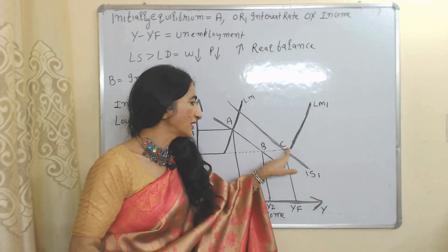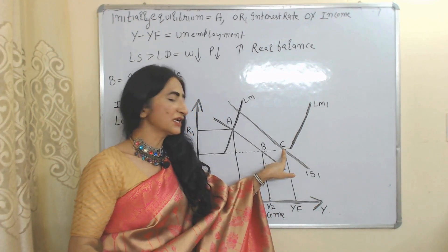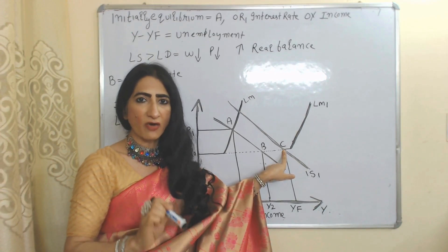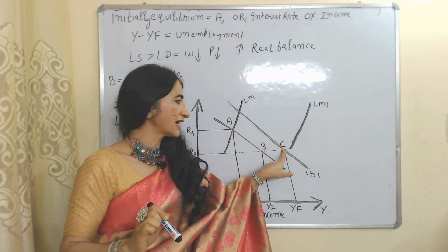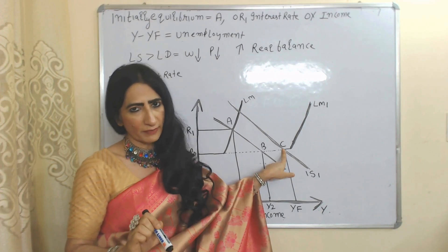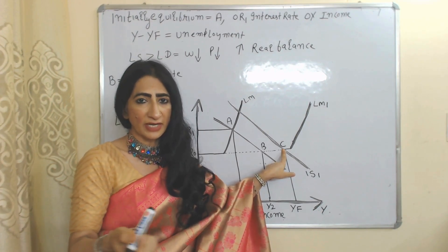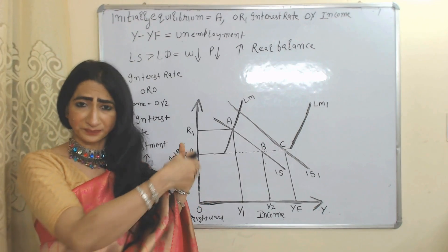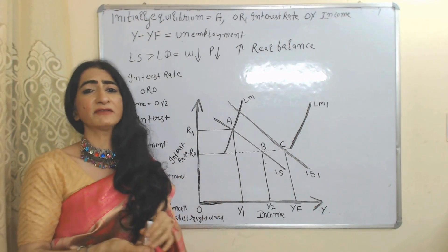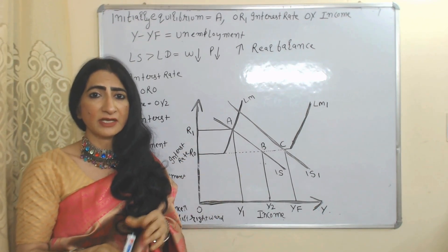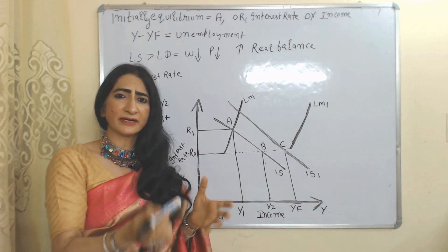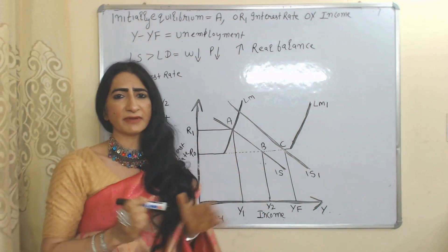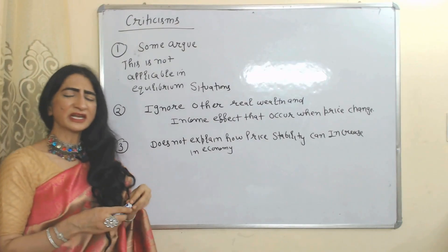As demand for goods and services increases, the IS curve will shift rightward. This is our new IS curve, and the economy will achieve the full employment point C. So now the economy reaches full employment at C. Here we can see how the real balance effect impacts our economy — sometimes creating disequilibrium, sometimes creating equilibrium.